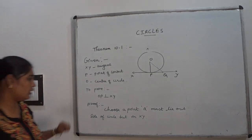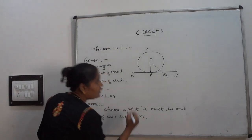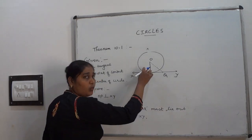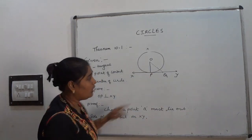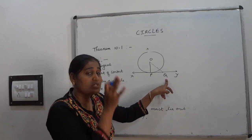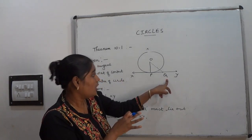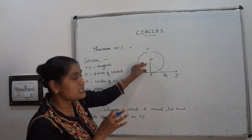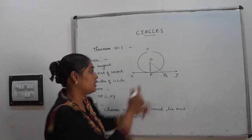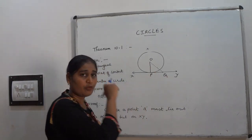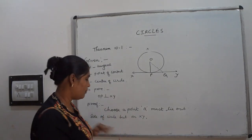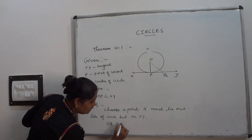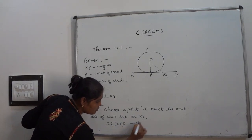Now, check that OQ is greater than OP. Why? Because Q lies outside of the circle, the distance OQ is bigger than OP, since OP is the radius and Q is outside. Therefore, OQ is greater than OP. Write this as the first equation: OQ > OP.